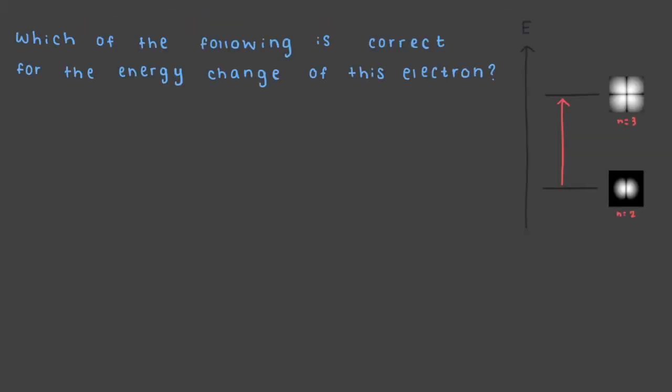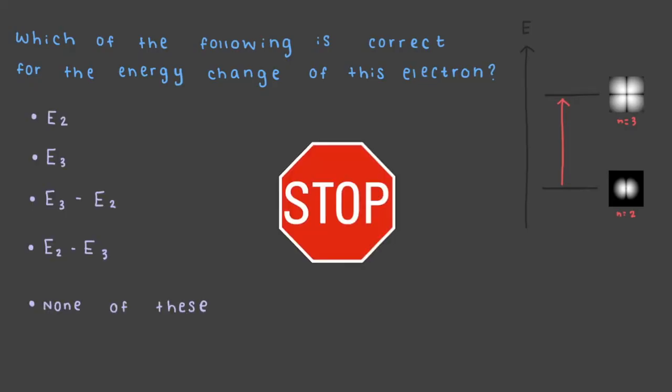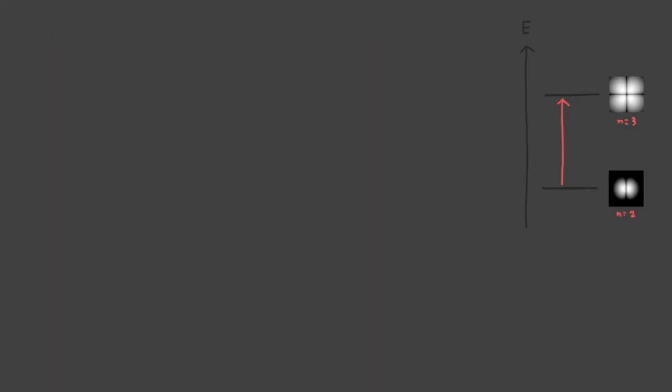Which of the following is correct for the energy change of this electron? In order to calculate the wavelength of the light, we first need to find the change in energy of the electron.